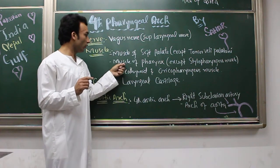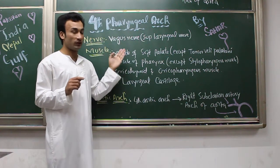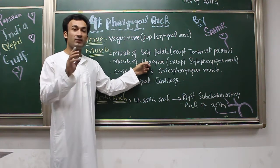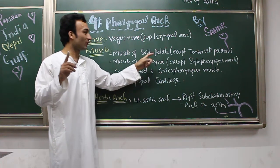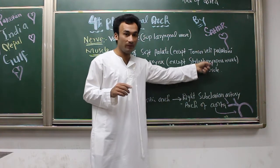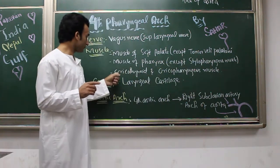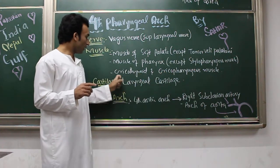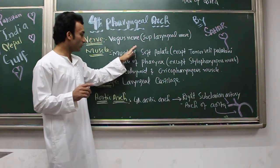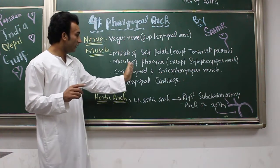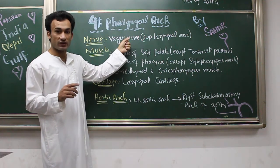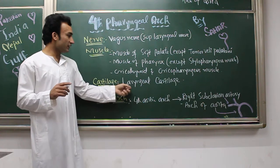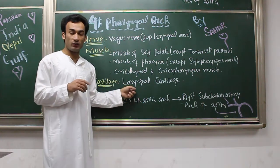So now you know that all muscles of the pharynx are supplied by the vagus nerve except the stylopharyngeus muscle. Also, the cricothyroid and cricopharyngeus muscles are supplied by the vagus nerve, and these are related to the fourth pharyngeal arch. So all these muscles are supplied by the vagus nerve and are derived from the fourth pharyngeal arch.